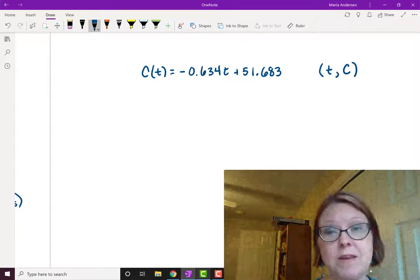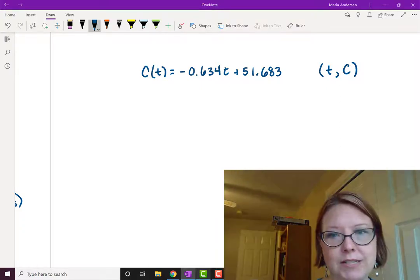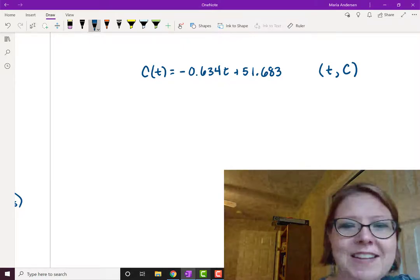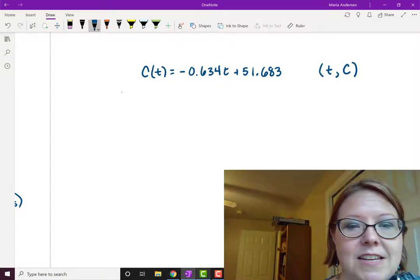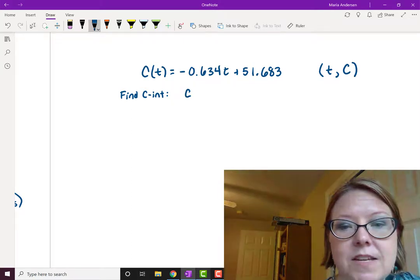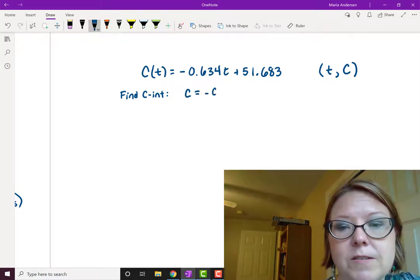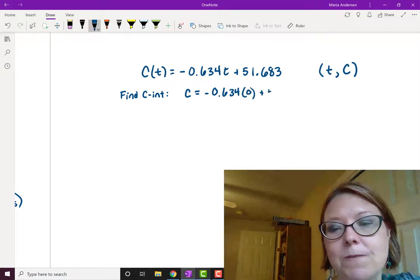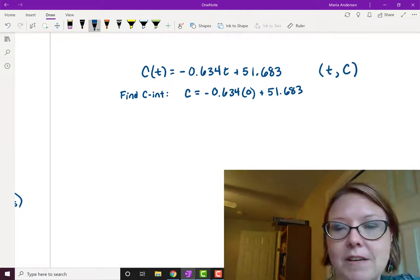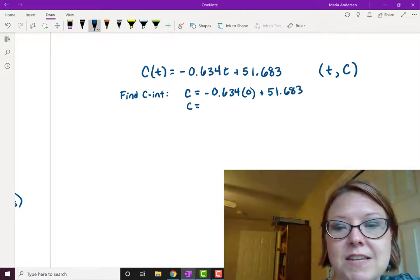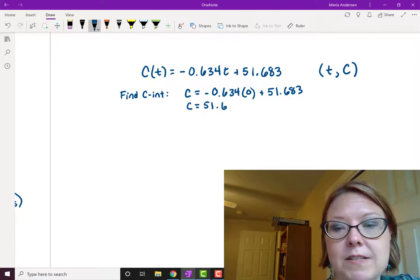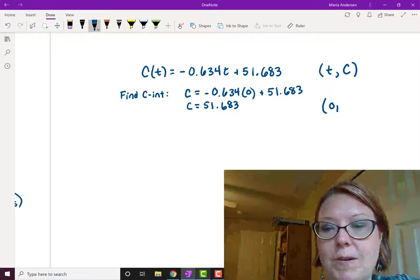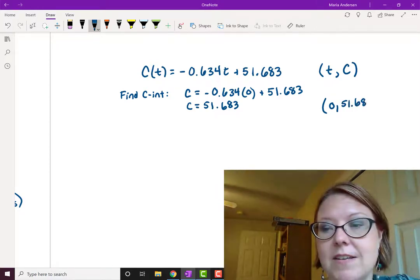A point on this function will be written with the independent variable first, that's the t, and the dependent variable second, that's the C. So any point would be (t, C). That's important because it'll help us with finding the intercepts. I'm going to first let t = 0 to find the C intercept. Letting t = 0, I'll have C = -0.634(0) + 51.683, which simplifies to C = 51.683. So this will be the point (0, 51.683).